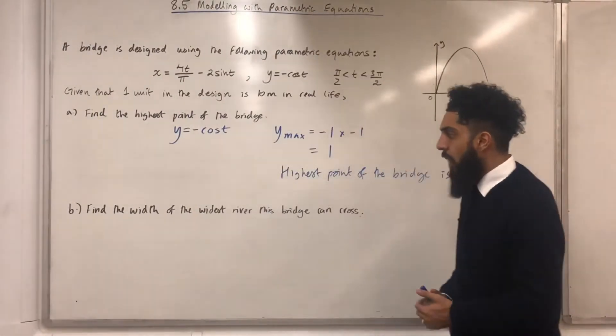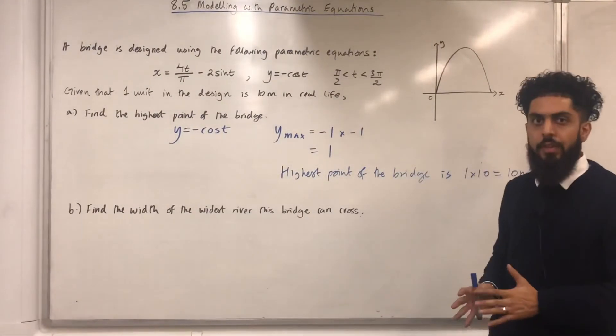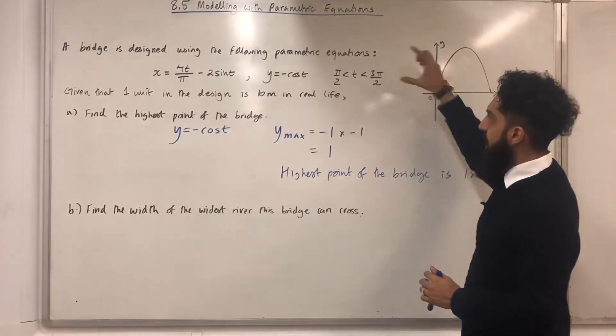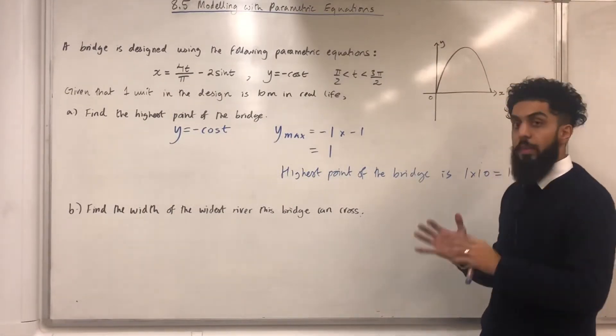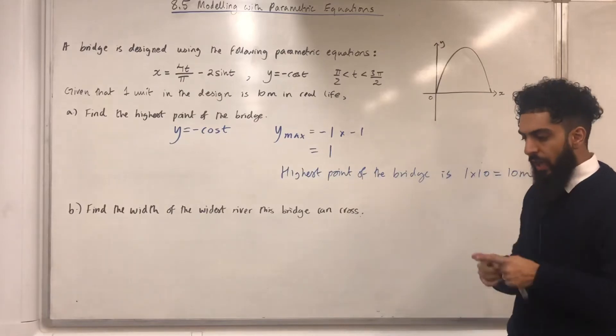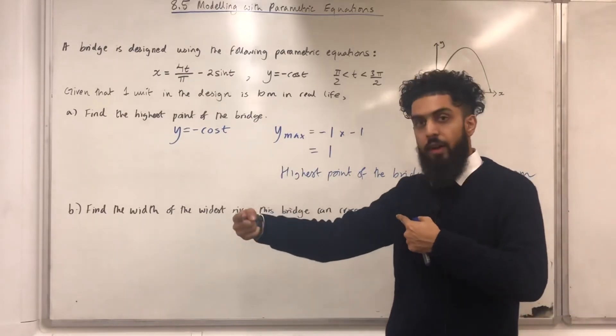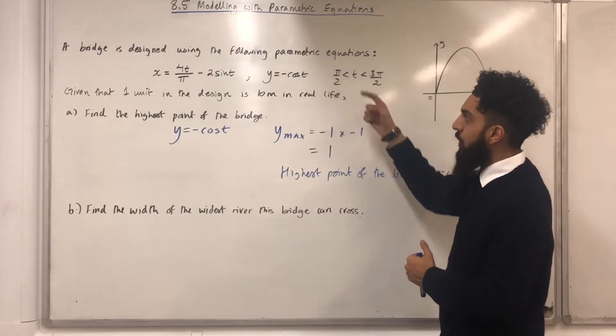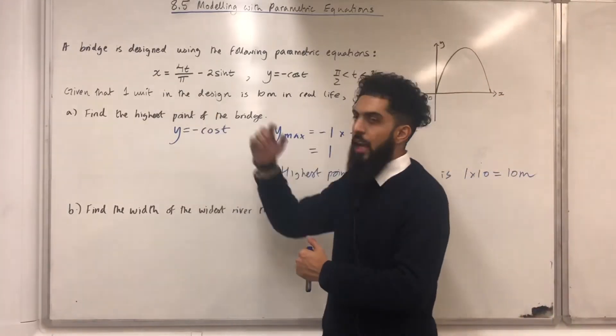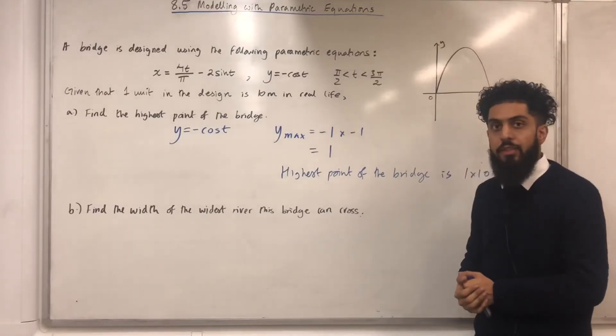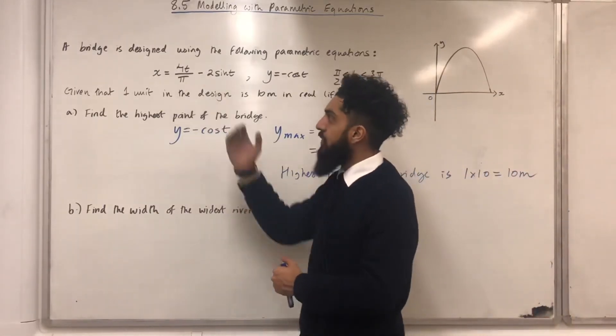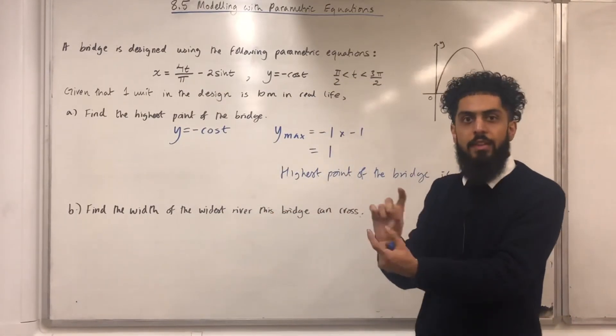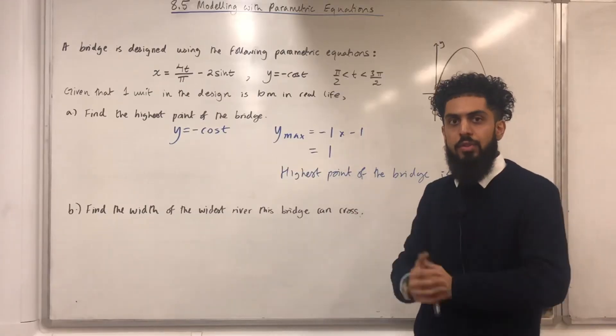Part B finds the width of the widest river this bridge can cross. Now, if we go back to the interval for t, we see that t is more than pi over 2 but less than 3 pi over 2. To work out the width of the widest river that this bridge can cross, all we have to do is take t equal pi over 2 and substitute that into the equation for x, and then take t equal 3 pi over 2 and substitute that into the equation for x, and then work out the difference in x for those two t values.